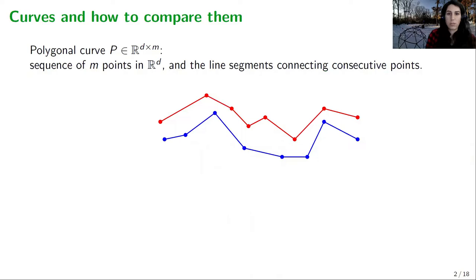Let's start with defining the main object of this talk: polygonal curves. A polygonal curve is simply a sequence of m points in d dimensions and the line segments connecting any two consecutive points.